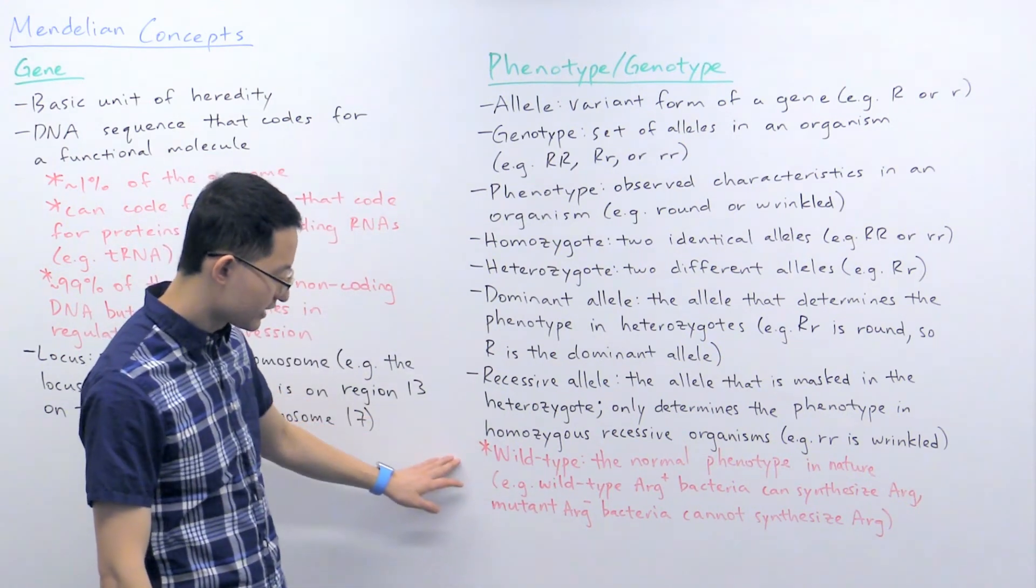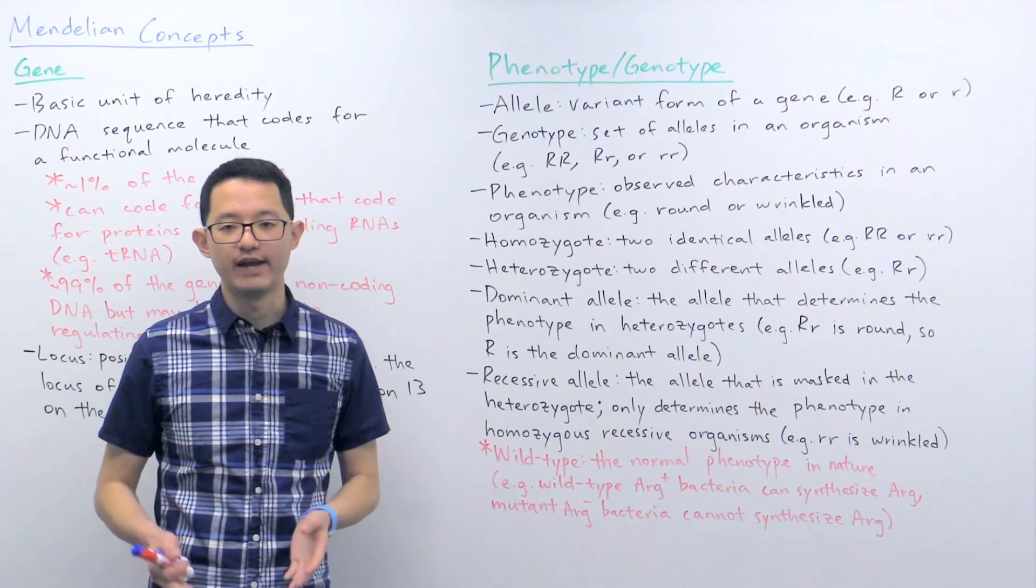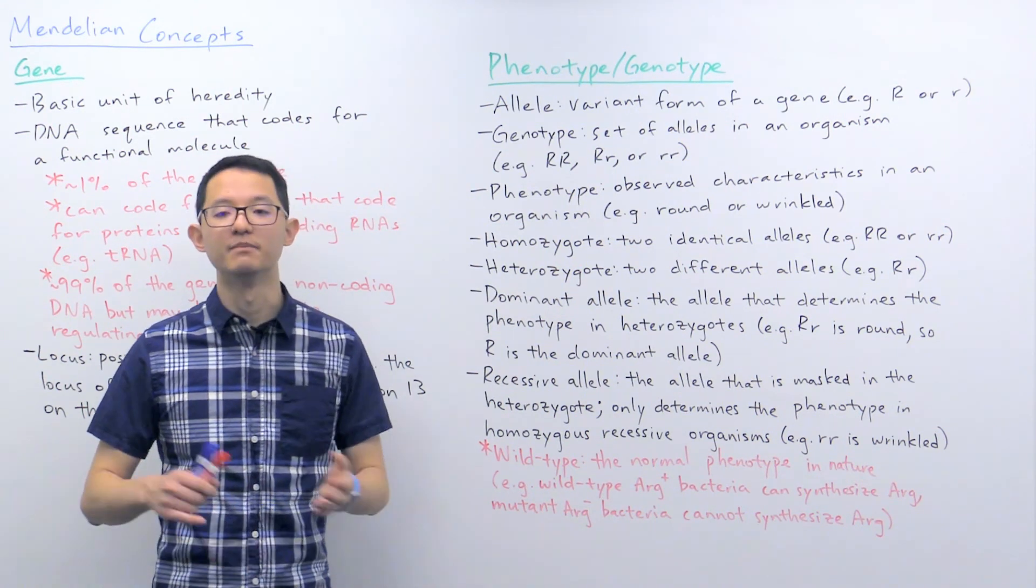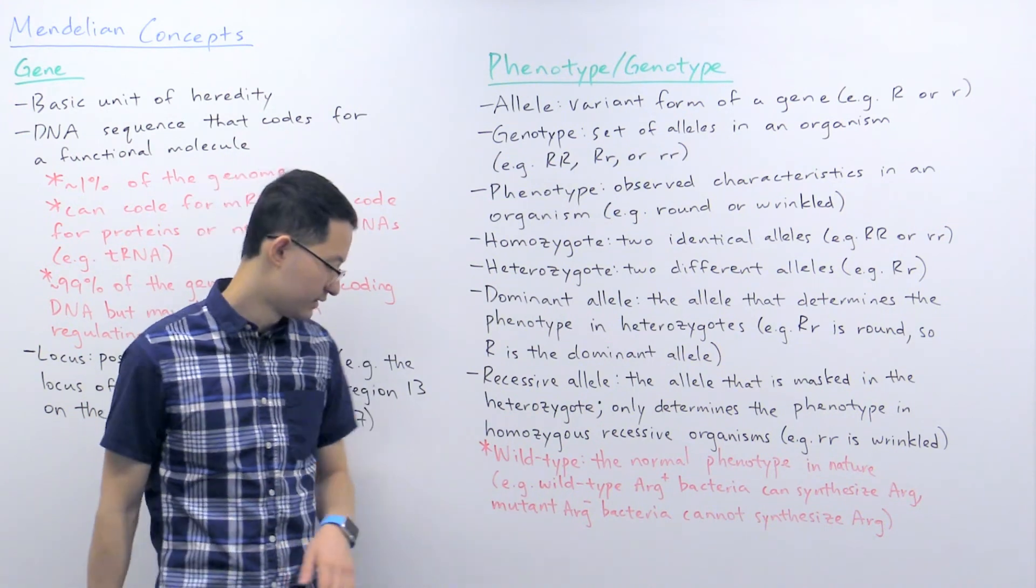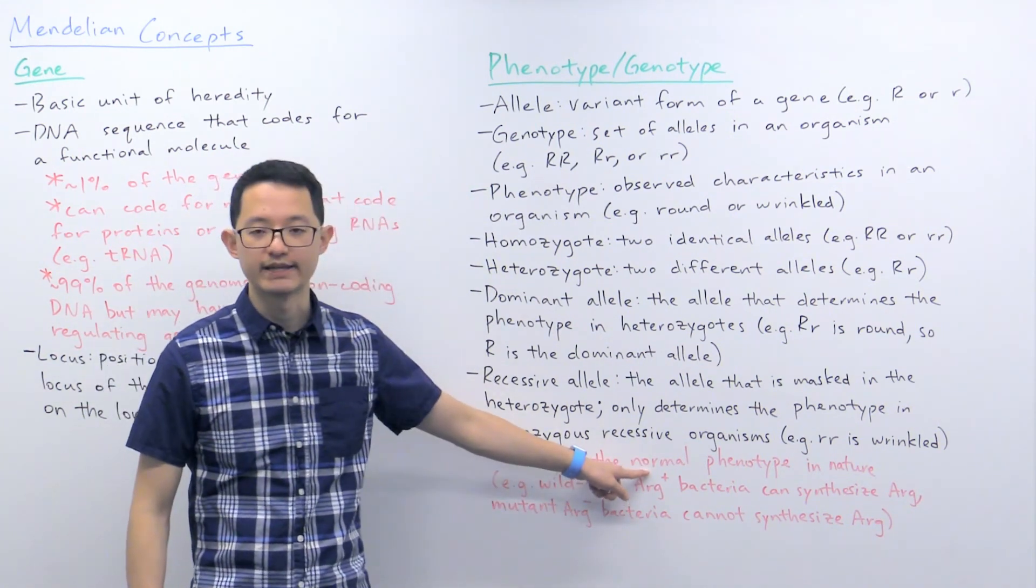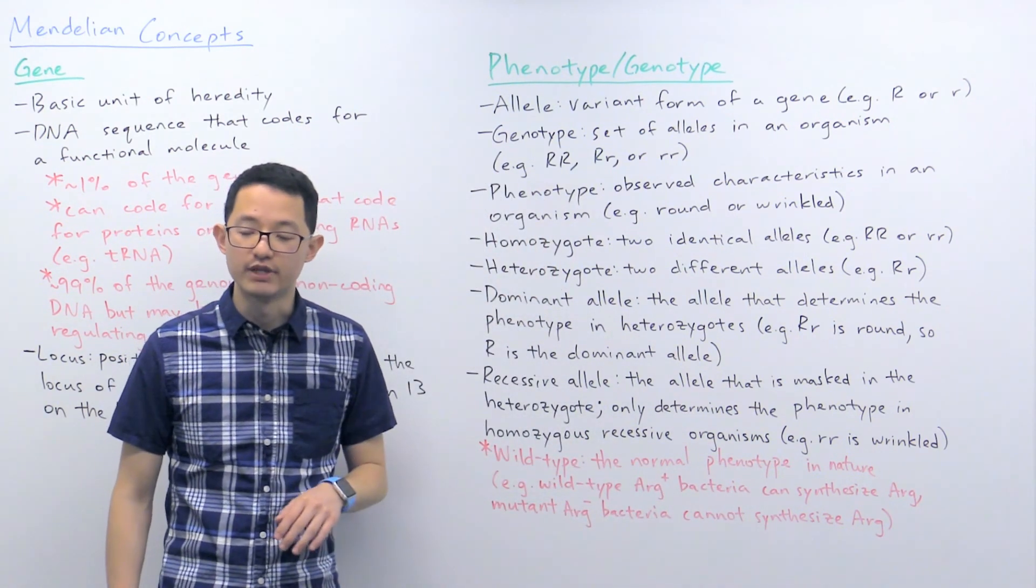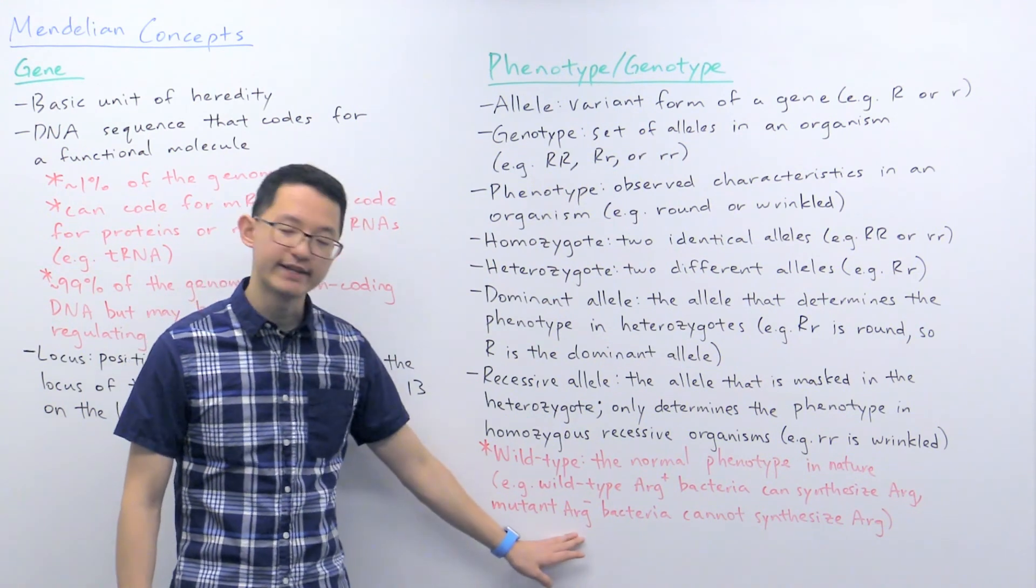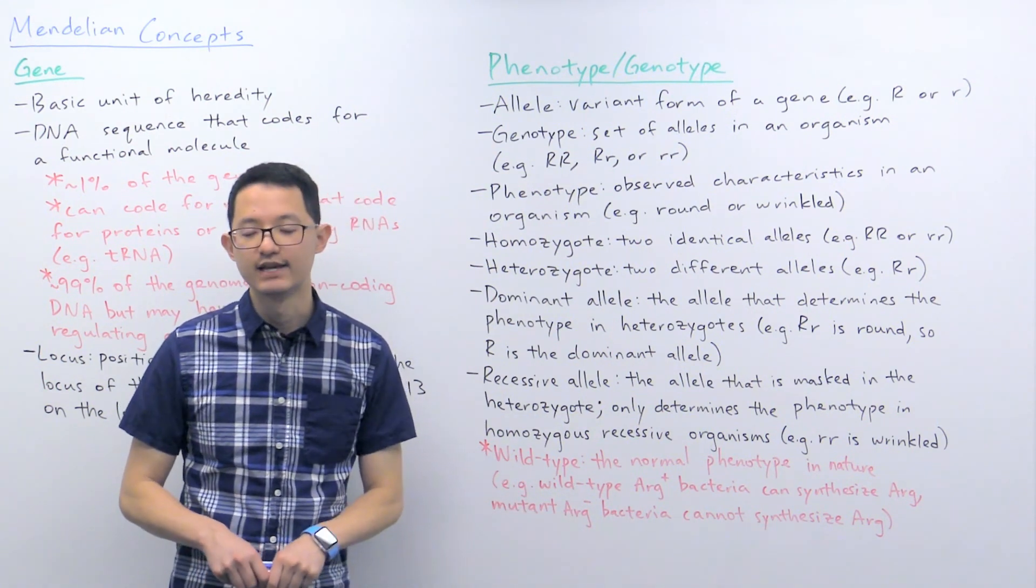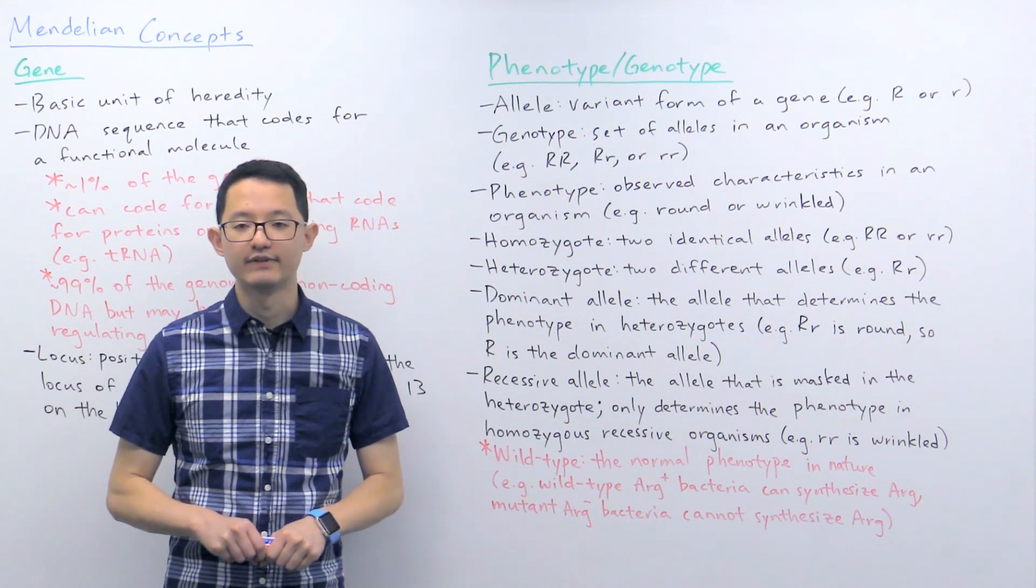And the last thing I want to talk about is another term that you will see on the MCAT, which is wild type. Wild type is referring to the normal phenotype found in nature. So wild type, you can just think of as the normal organism. And then you can contrast this with mutants, which are different from the wild type. So for example, we can consider wild type ARG plus bacteria. The plus is usually used to indicate the wild type allele. So that means ARG plus bacteria, they're normal and they can synthesize their own arginine amino acids. And we can then consider mutant ARG minus bacteria. The ARG minus bacteria is a mutant indicated by the minus, and these bacteria cannot synthesize their own arginine amino acids, meaning that these mutants cannot survive and grow unless they are given arginine supplements.